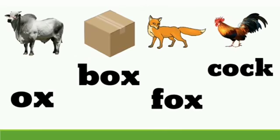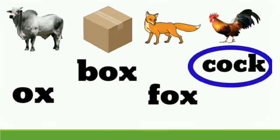Now see: Ox, Box, Fox, and Cock. Which is the odd man out? Correct! It's Cock. Because Ox, Box, and Fox are similar in sound when we read them, but Cock is different. So Cock is the odd man out.